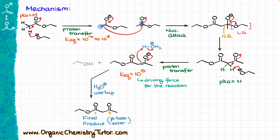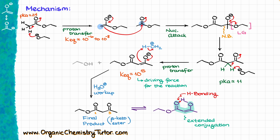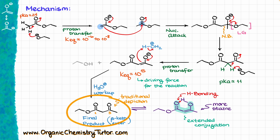One other thing I want to mention is that beta-ketoesters actually typically exist in the enol form due to intramolecular hydrogen bonding and the extended conjugation that stabilizes the entire system. However, even though that is the more thermodynamically stable form, we still traditionally show those molecules in the keto form. So don't be surprised if your instructor insists on the keto depiction instead of the more thermodynamically stable enol form.